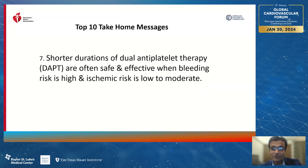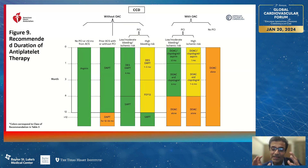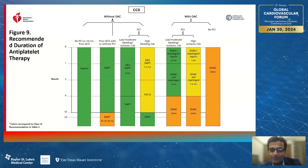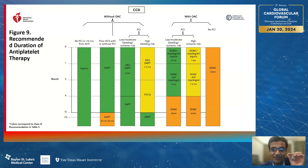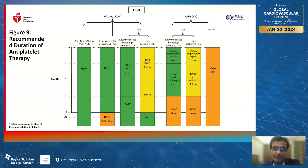Message number seven relates to dual antiplatelet therapy. The guideline is moving toward shorter and shorter duration of DAPT in patients with CCD, whether with or without an oral anticoagulant. There are many recommendations to cut down the duration of dual antiplatelet therapy and use just one antiplatelet agent, especially in patients with high bleeding risk.